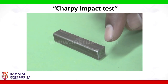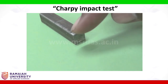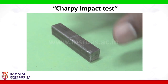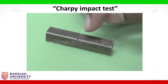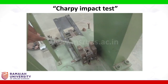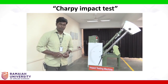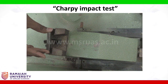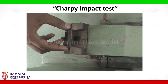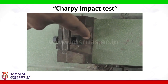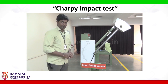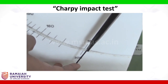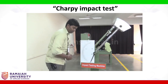To start the Charpy test on mild steel, take a mild steel specimen of cross-section 10 mm by 10 mm and length 55 mm, with a V-notch of depth 2 mm. Place the specimen over the specimen support such that the notch coincides with the reference line. Then keep the pointer at 300 joules and take 300 joules as the initial reading.